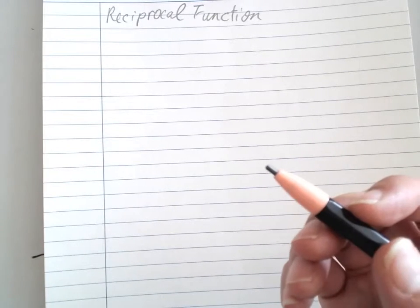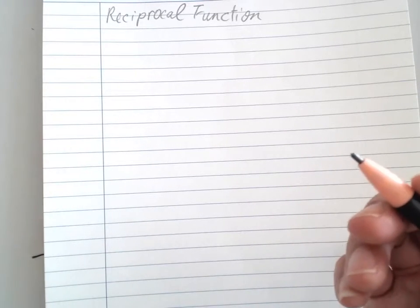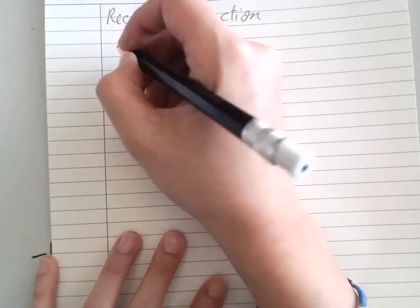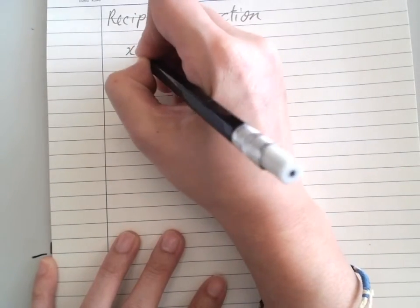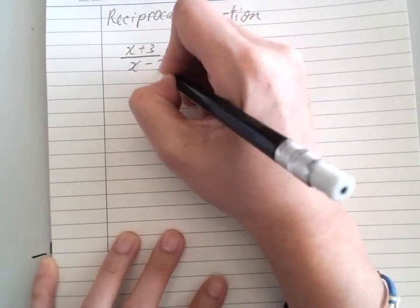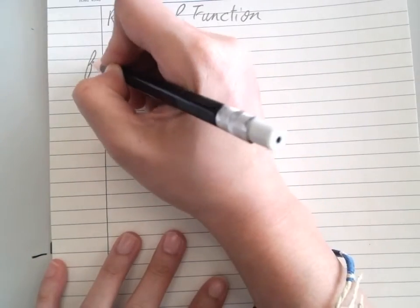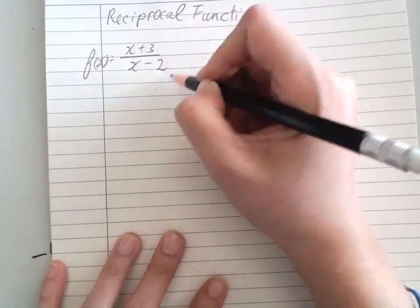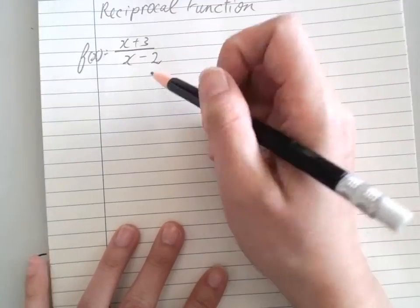Let's try an example here. Okay, so we have f(x) = (x+3)/(x-2). When it looks like a fraction, it's a reciprocal function, so we're going to think about the asymptotes.